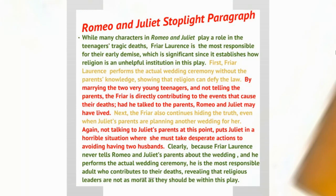Here's a more full-fledged analytical paragraph based on a student's interpretation of Romeo and Juliet — this is in the final stage. I wanted to start with a very simple paragraph, and now let's look at a very analytical-based paragraph. Here's our topic sentence: 'While many characters in Romeo and Juliet play a role in the teenagers' tragic deaths, Friar Lawrence is the most responsible for their early demise, which is significant since it establishes how religion is an unhelpful institution in this play.' This is a huge analytical argument — the student has to prove that Friar Lawrence is most responsible, but also that it symbolizes how religion is unhelpful. We see a thematic idea as well as an analysis of a character.